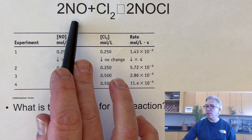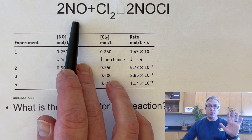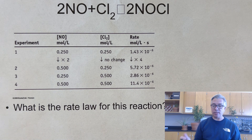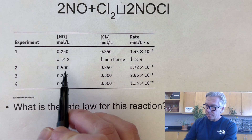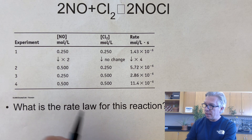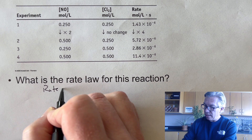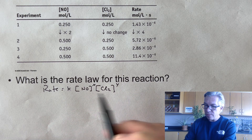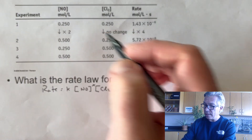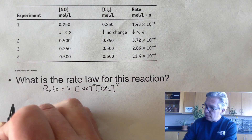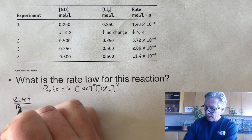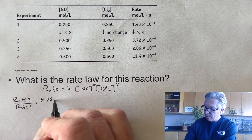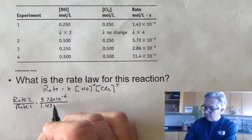Your teacher will probably want you to prove it with a calculation. To do that, write the rate law as rate = K × [NO]^x × [Cl2]^y. Write it twice — one for each trial — and divide: rate 2 over rate 1 equals 5.72×10⁻⁶ over 1.43×10⁻⁶, set equal to (0.5 over 0.25)^x times (0.250 over 0.250)^y.